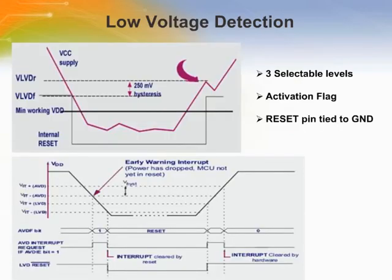The purpose of the LVD is to ensure that the ST7 always functions in its safe area. When VDD is below the minimum working VDD, the behavior of the ST7 is no longer guaranteed — there is not enough power to decode or execute instructions or read memory. When VDD is below the LVD level, the ST7 enters a reset state to prevent unpredictable malfunctions.